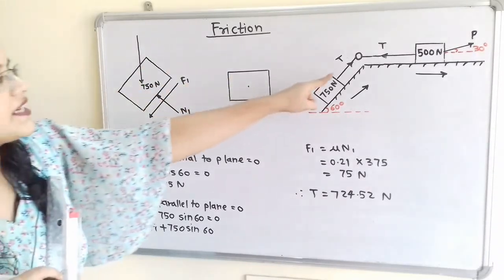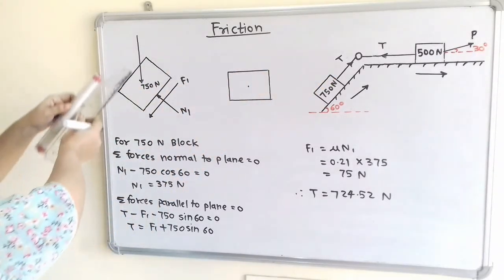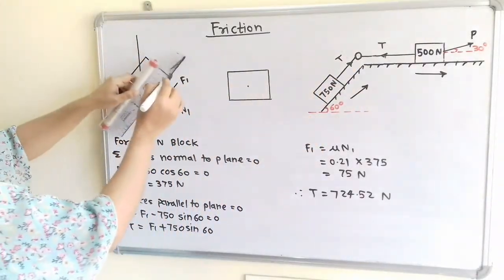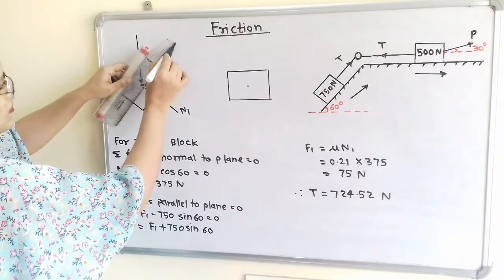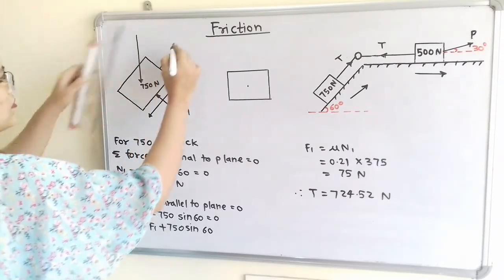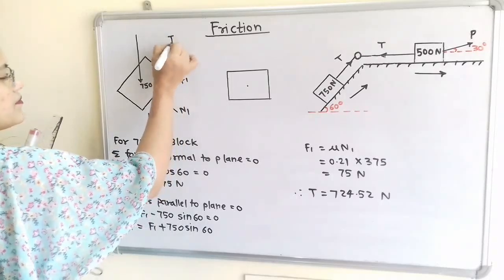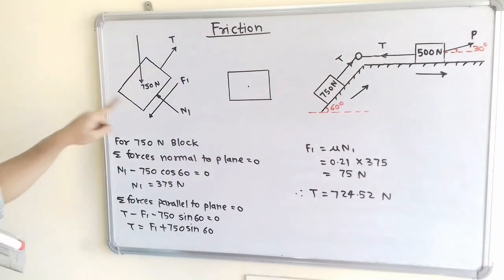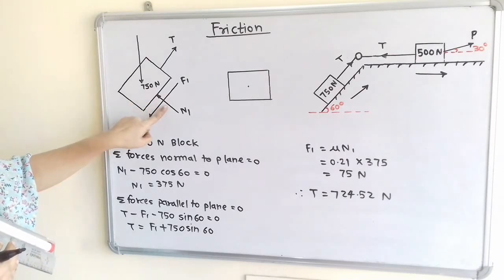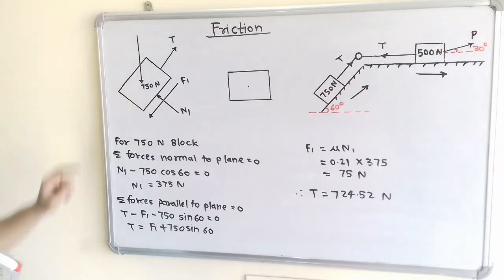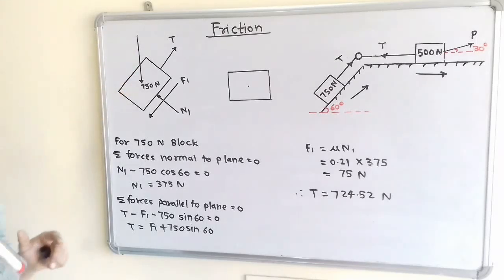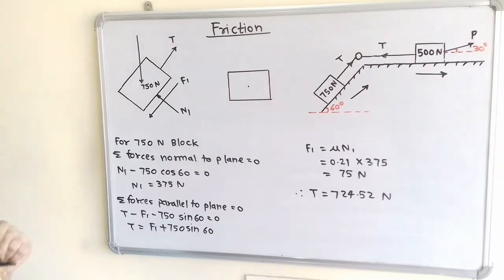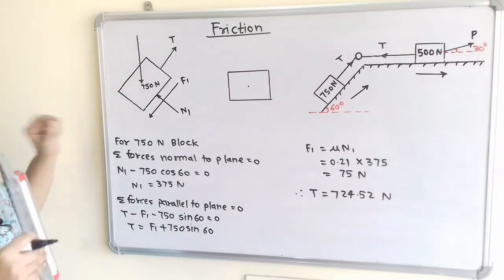There is tension created in the string, and this string is parallel to the inclined surface. If we observe this diagram, all the forces are parallel and perpendicular to the inclined plane except the weight. The weight acts in the vertically downward direction, so we will resolve this weight into two components.